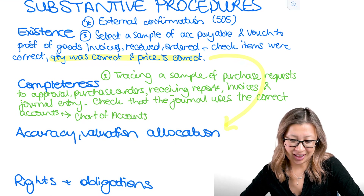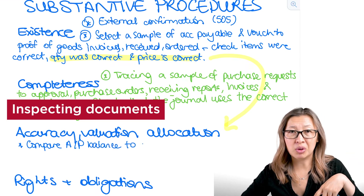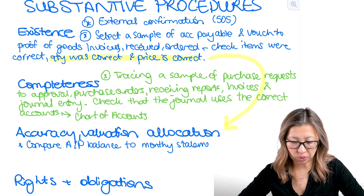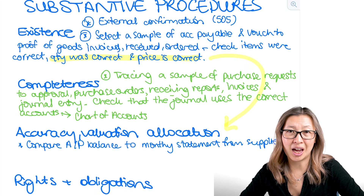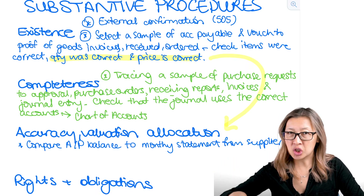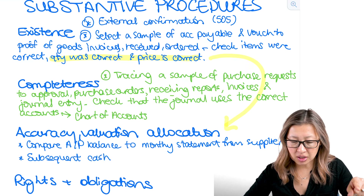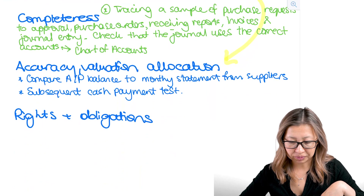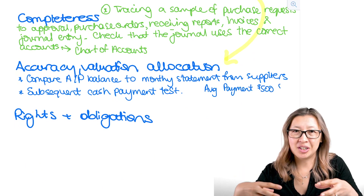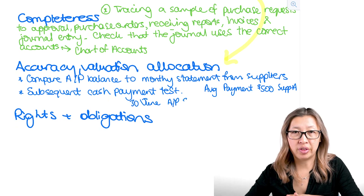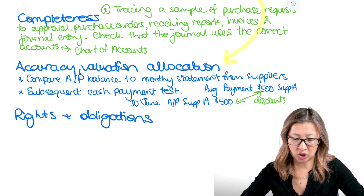When it comes to accuracy, valuation, and allocation, we probably want to start with comparing the balance of accounts payable for a particular supplier to the monthly statement received, just to make sure that amount looks correct. Then, if statements aren't provided, we might use a subsequent cash payments test — going further into July and August to see if we can find any payments that match back to particular accounts payable. That test is also going to help a little with completeness as well as accuracy, valuation, and allocation. When doing a subsequent cash payments test, we'll also need to take into account any discounts received, to make sure we don't flag an account as understated when we may have just received a discount for paying early.